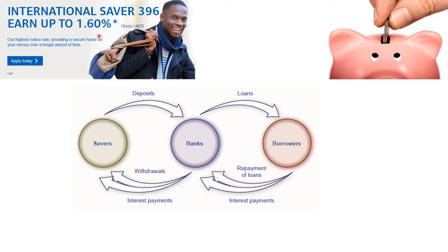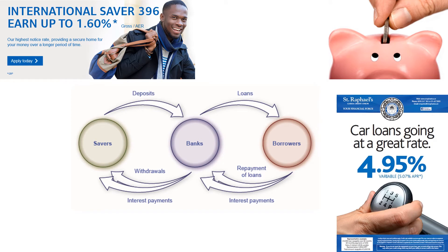If this was your account, savers would be earning 1.6% added to their account every year. The flip side of this is if you're a borrower — you may have taken a loan from the bank, and in that situation the interest rate you pay, for example 4.9% on a loan to buy a car, is the amount you pay in addition to the repayment of the loan. You pay interest back to the bank on top.